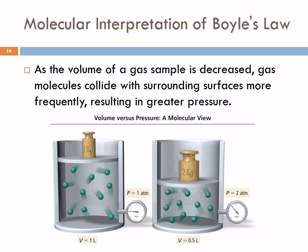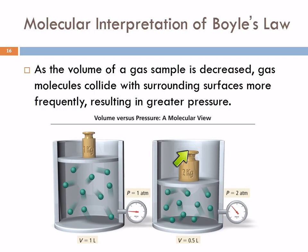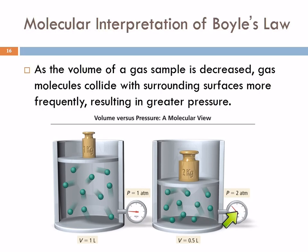As the volume of a gas sample is decreased — here we see a sample of gas in a container with a movable lid. With 1 kilogram weight on top, if we double that, we're doubling the pressure and squishing it together, causing the volume to be cut in half. So here we have 1 liter at 1 atmosphere of pressure, and at 2 atmospheres of pressure we have half a liter. The pressure times the volume equals the pressure times the volume.